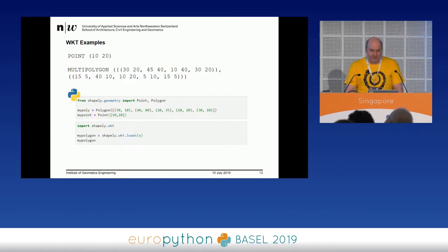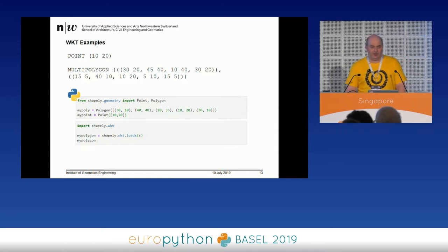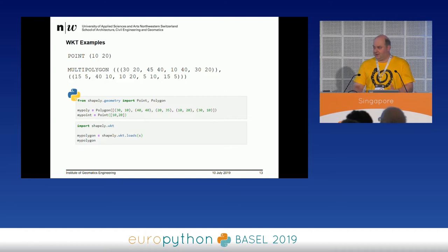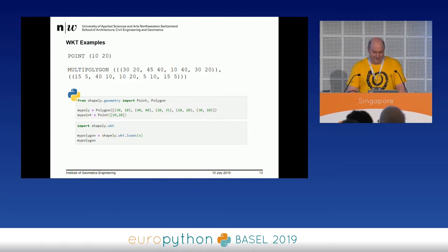In WKT, a point is specified as 'POINT(10 20)'. A polygon would be 'POLYGON(...)' with coordinates. There are also multi-polygons — for example, if you have a country with islands. There are also polygons with holes. This is all specified in WKT. We can create something similar using Python lists and tuples for coordinates. You import Polygon and Point from Shapely, specify your polygon, and note that the first and last point must be the same — a closed polygon — which is an important aspect of this standard.